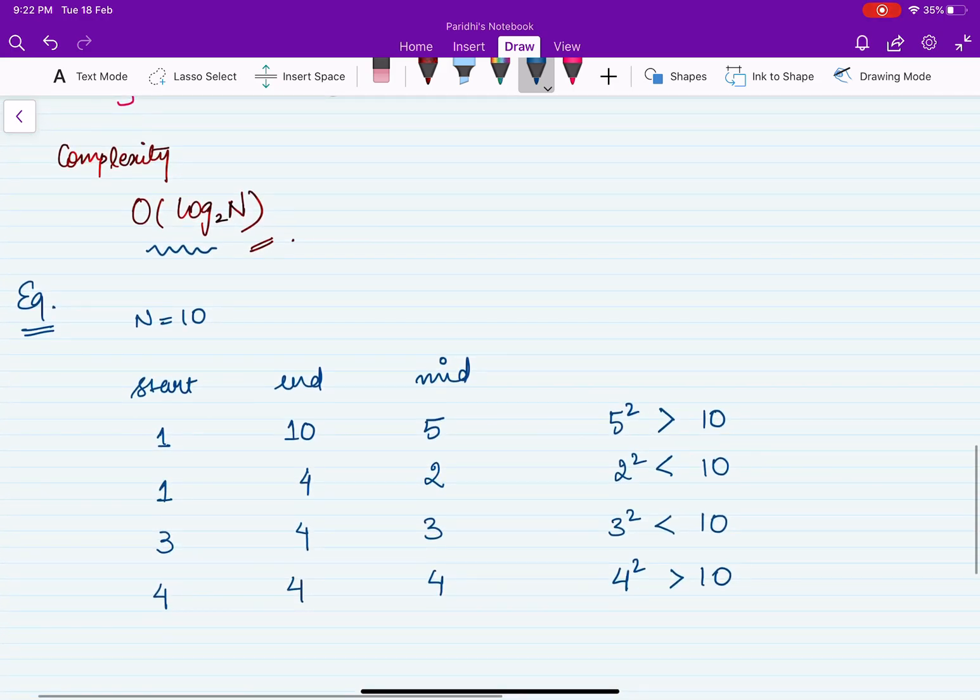Let's see this with the help of an example. Here our n is equal to 10. The start is going to be 1 initially and end is going to be 10. Mid is 5. 5 square is greater than 10, therefore we should move to our left. So end will become mid minus 1 and start will remain same.